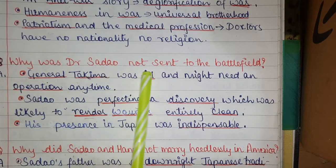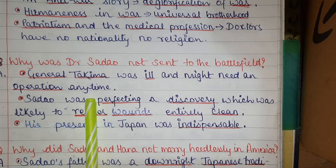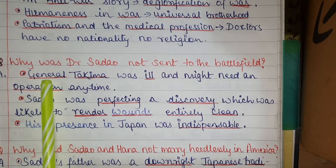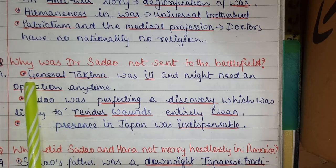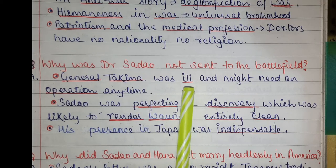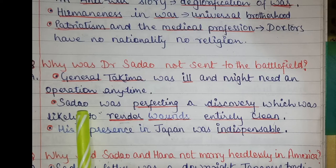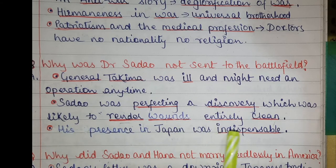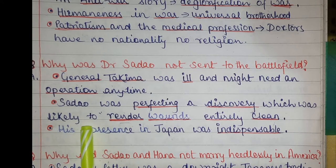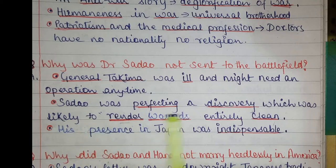The first question is: why was Dr. Sadao not sent to the battlefield? The answer is that General Takima was ill and might need an operation at any time. Keep in mind the general's name — Takima — for MCQ. General Takima had some gallbladder problem and had undergone operation many times, so Dr. Sadao was kept back because he was the one treating General Takima. Another reason was that Sadao was perfecting a discovery which was likely to render wounds entirely clean, so in order to complete this discovery, he had stayed in Japan.